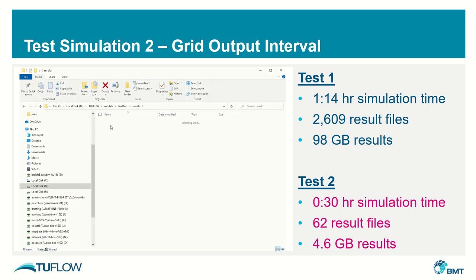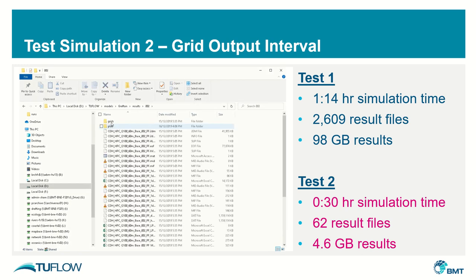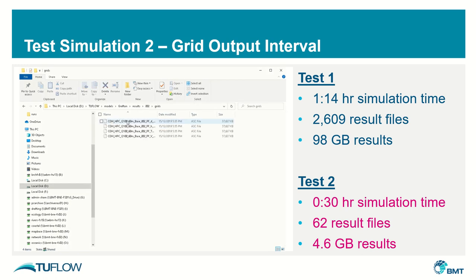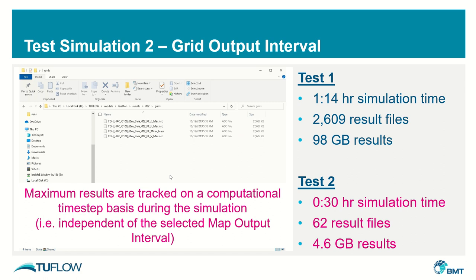If we look in the version 2 folder in grids now, you'll see that we just have maximum results in ASCII format. All the time-variant results are contained in the DAT files, which is a much more efficient way to store them. It's worth mentioning that these maximum results are tracked on a computational time-step basis during the simulation — the map output interval you specify won't affect them at all.